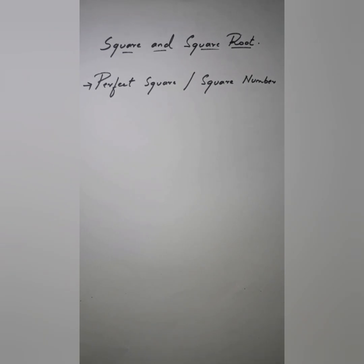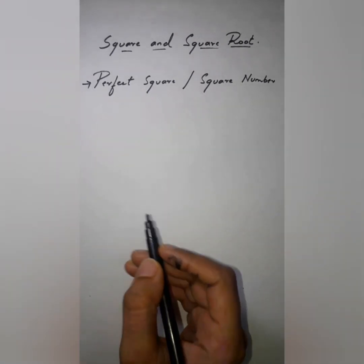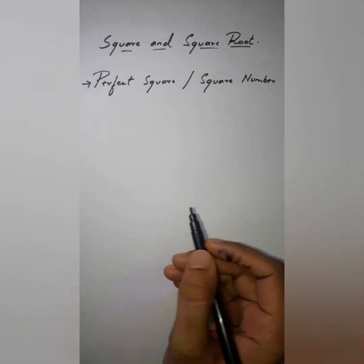In this video we're going to find out what are square numbers or perfect square numbers. This topic comes under the chapter 'Square and Square Roots' of the CBSE syllabus.